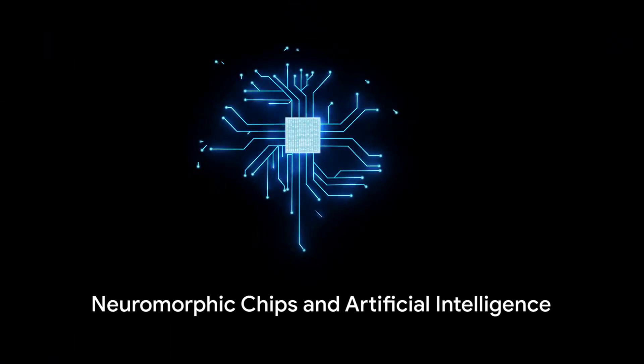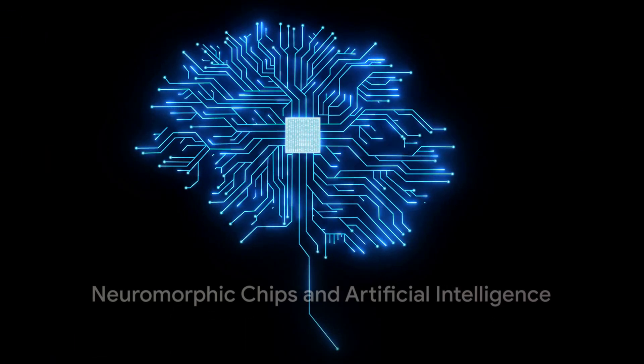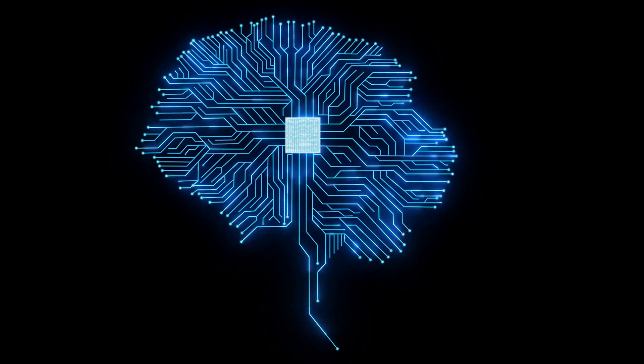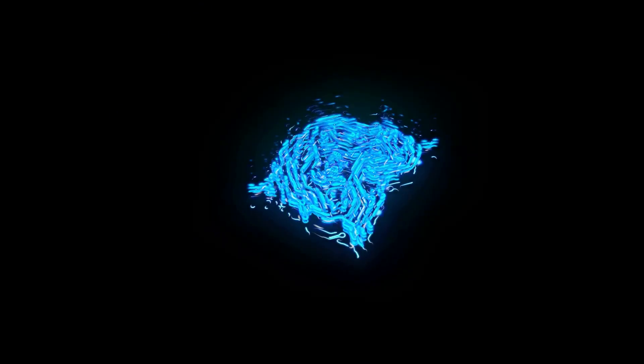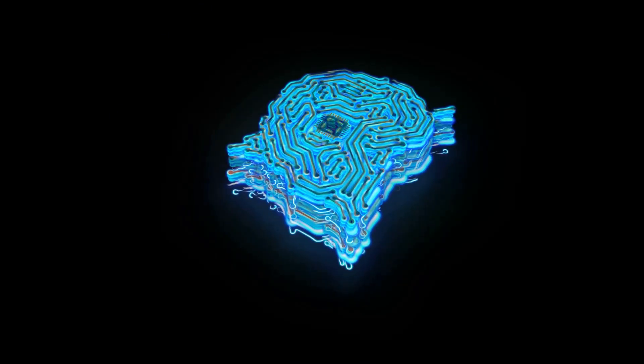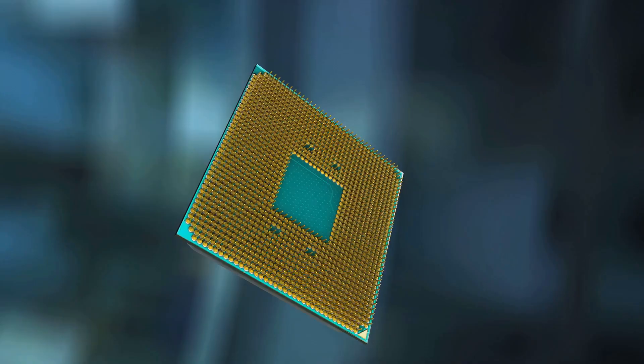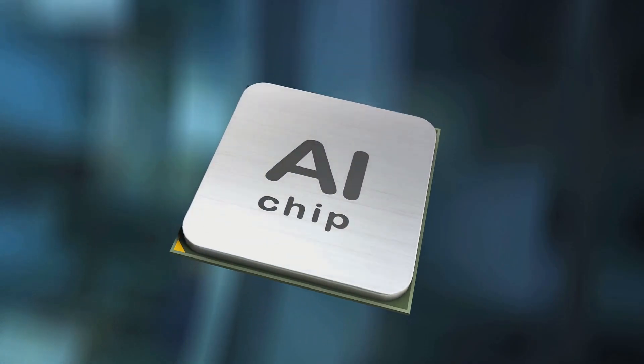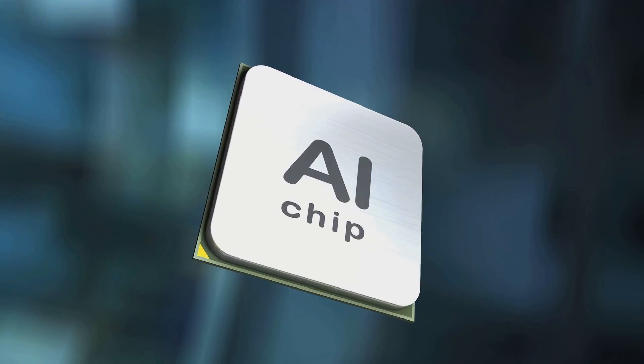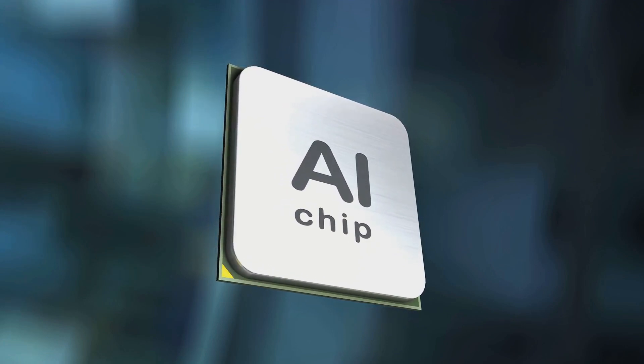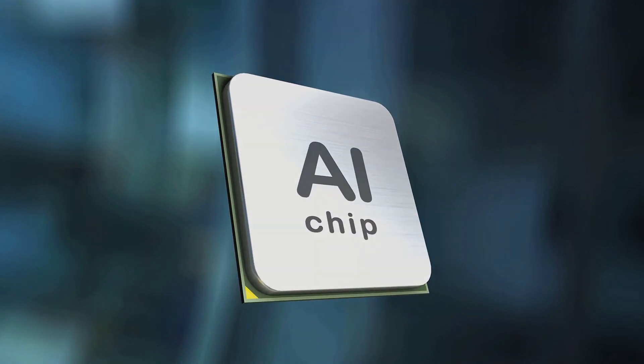Neuromorphic chips, the hardware equivalent of these spiking neurons, are the physical embodiment of this concept. They are designed to mimic the brain's structure and function, all the way down to the synapses. This allows them to process information in a way that's more akin to how the brain works, leading to potential breakthroughs in artificial intelligence and machine learning.